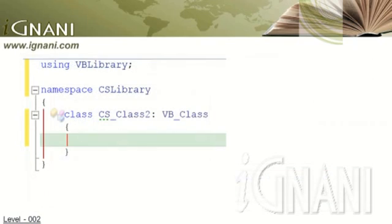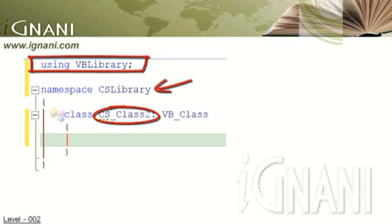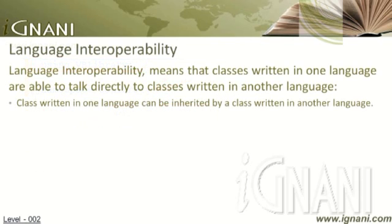Check out this code which is written in C-Sharp. Here the first line is importing the VB library namespace. The C-Sharp class in this code belongs to a different namespace called CSLibrary. You can see a class named CS_class2, which inherits the VB_class that was written using VB.NET. This demonstrates how a class written in VB.NET is inherited by a class written in C-Sharp.